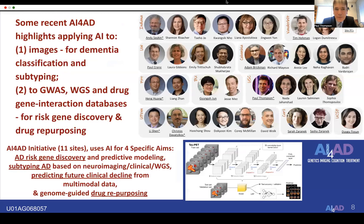I'll tell you a little bit about projects applying AI to images for dementia classification and subtyping, and also to whole genome data to discover markers that influence risk for Alzheimer's disease and future decline, and also that are relevant for drug repositioning.